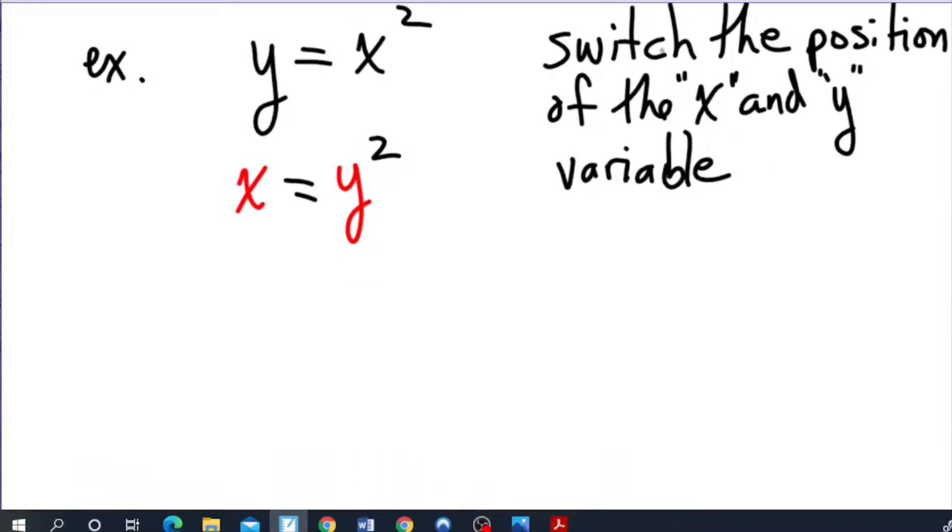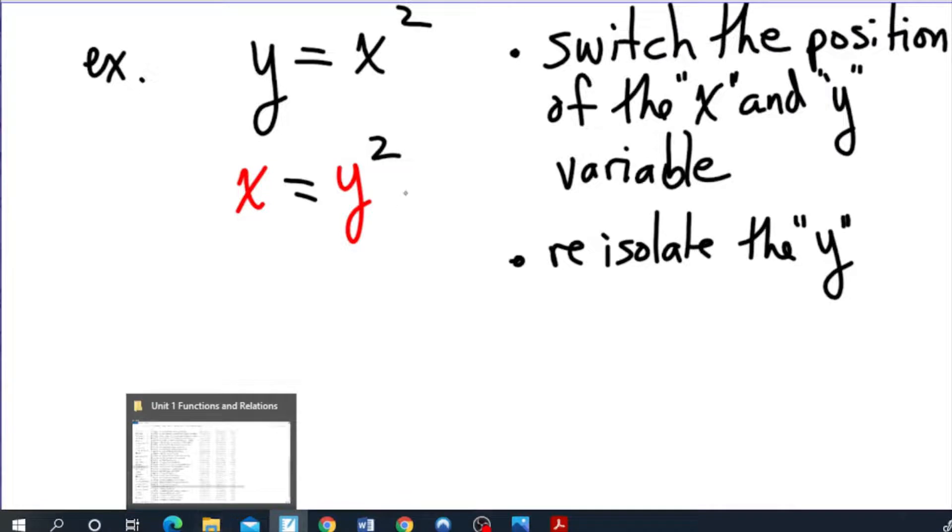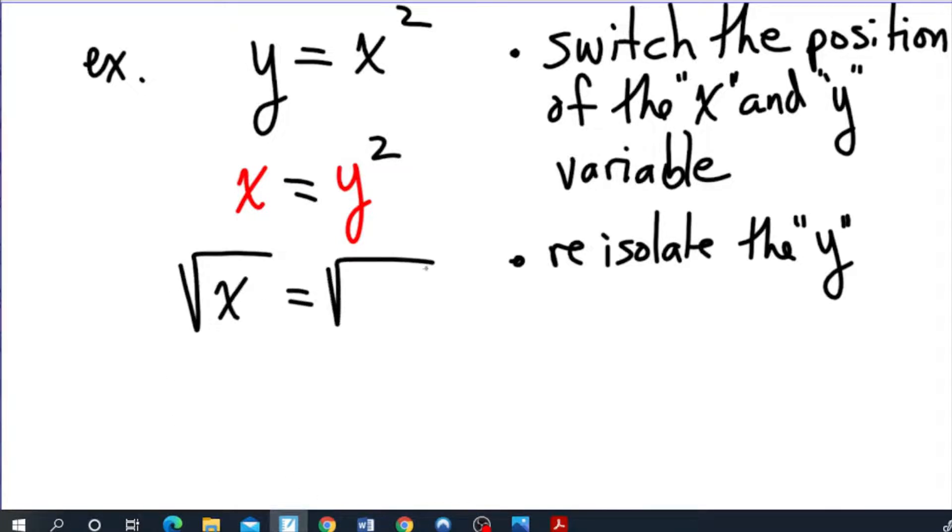Once you've done that, you re-isolate the y value. And in a case like this, you would then as a mathematician have to create a symbol to represent how are we going to destroy the squared that's affecting the y in order to get our x all by itself. And the process to do that is with a square root. So we would square root x. We would square root the y squared. And our final answer would be y is equal to root x. And we have now created an inverse function.